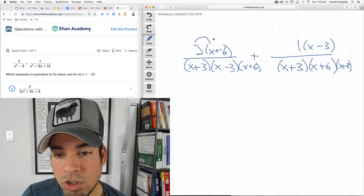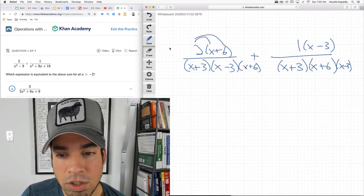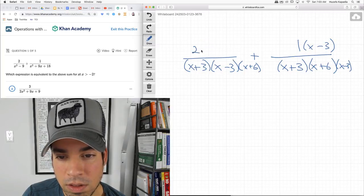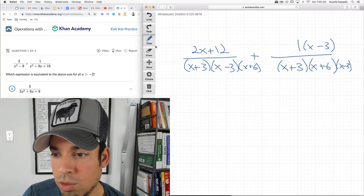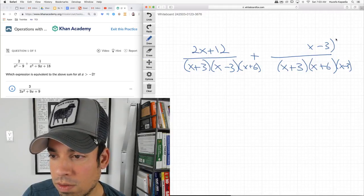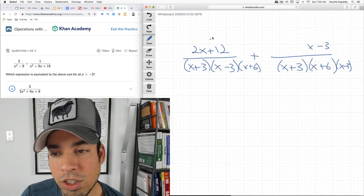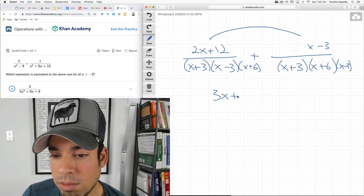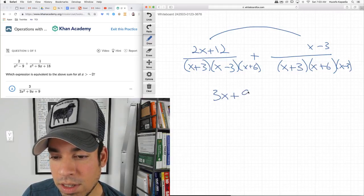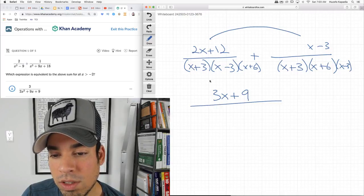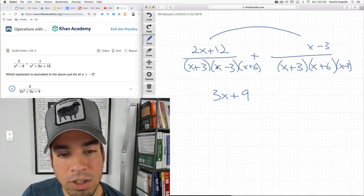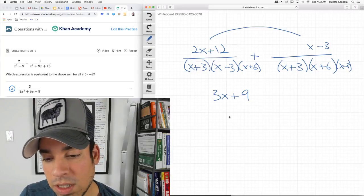I need to add x plus 6 here, but I have to do the same to the top. Now I need to add x minus 3 here and the same to the top. Now these are all the same. I'm going to quickly distribute this and that's 2x plus 12. And now we can just add these numerators and it becomes 3x plus 12 minus 3 is 9 over this whole thing. But before I even do that, I'm going to factor this: 3 times x plus 3.